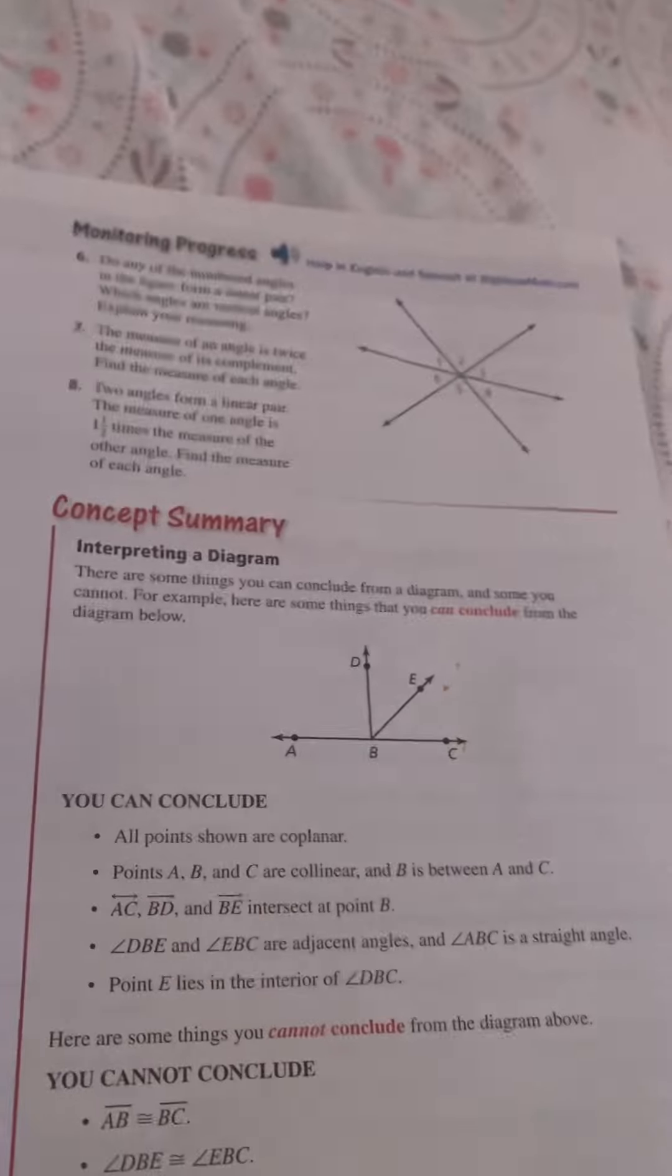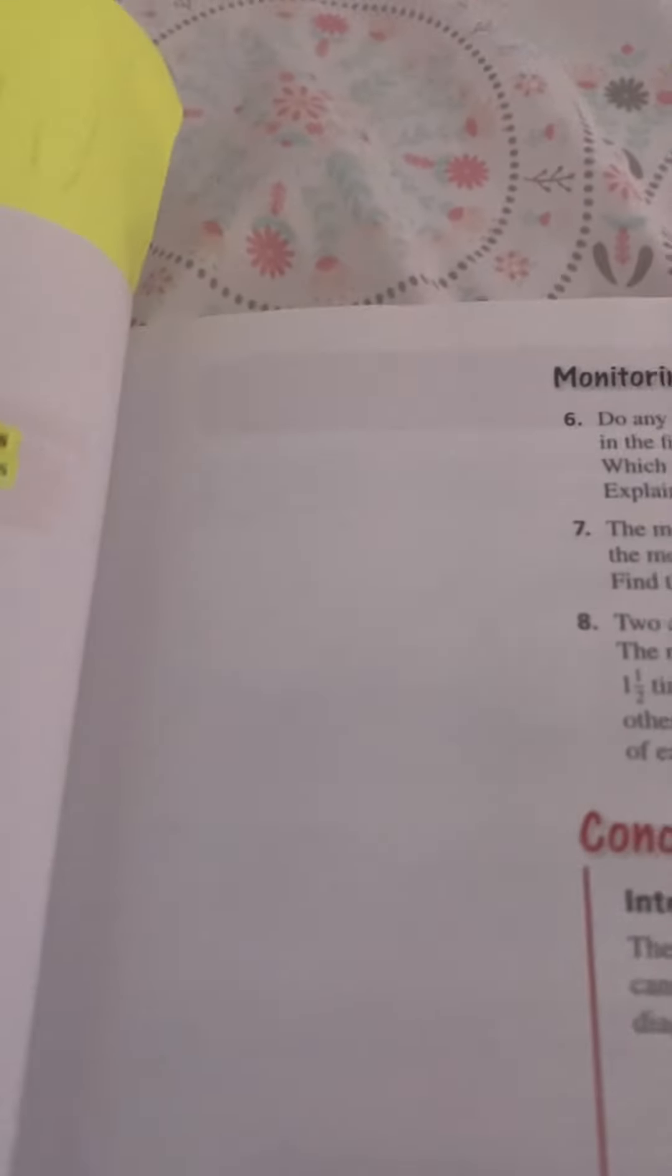Common error: In example four, one side of angle one and one side of angle three are opposite rays, but the angles are not a linear pair because they are not adjacent.